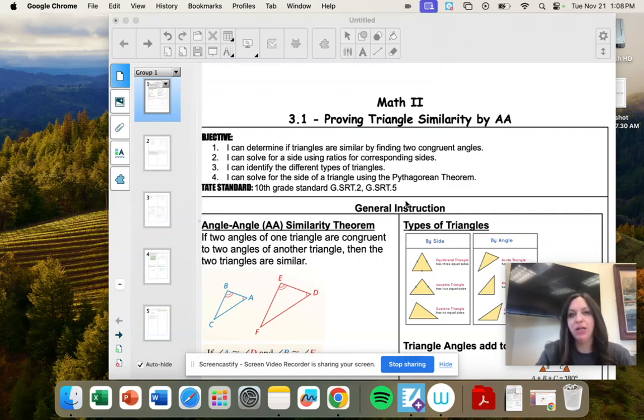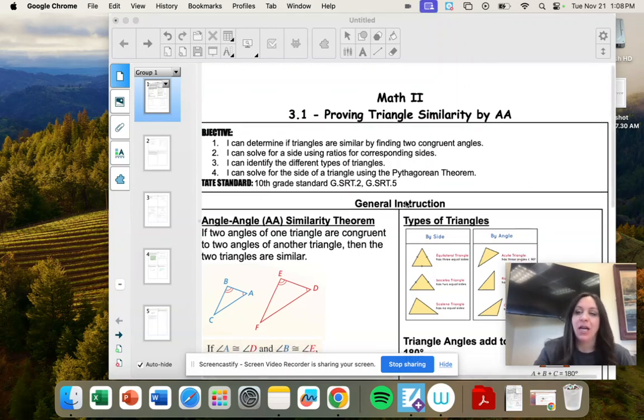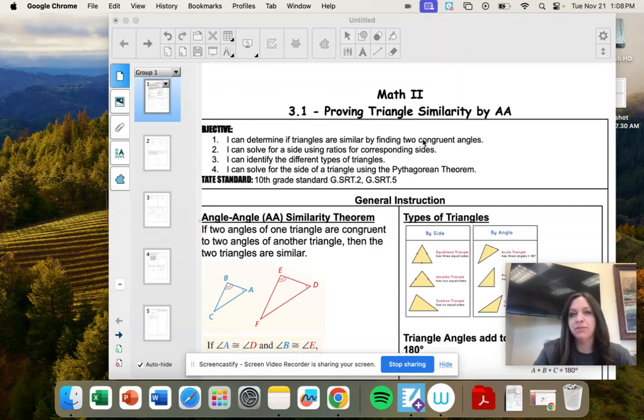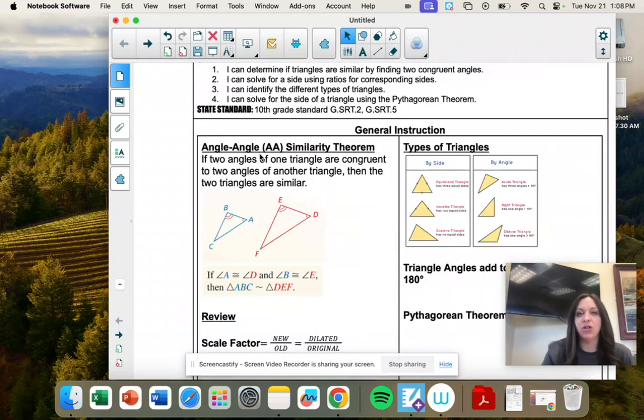Okay, unit three. We are kind of continuing what we've been doing. So this section is proving triangle similarity by AA. AA means angle angle.